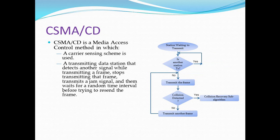Now let's look at the operation of CSMA/CD. All computers attached to the Ethernet use CSMA/CD to coordinate their activities. A computer wishing to transmit checks for electrical activity on the cable — informally called a carrier. If there is no carrier, the computer can transmit. If a carrier is present, the computer waits for the sender to finish before proceeding.